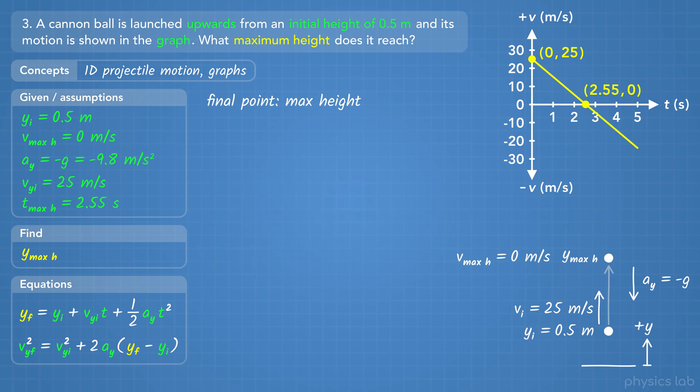Now let's solve this using the other equation. Instead of plugging in numbers at the beginning, let's try rearranging the variables first to isolate the final position, and then plug in numbers at the end. First, we can subtract vy initial squared, divide by 2 ay, then add y initial to both sides, so y final is by itself.